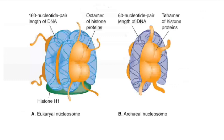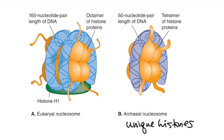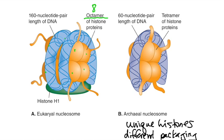One way archaea are similar to eukarya is that they contain histones, but the histones they contain are unique to themselves, and the way they package their DNA around the histones is different from eukarya. Eukarya use octamers of histones — so they have eight histones total — and the DNA wraps around them. About 160 nucleotide pairs wrap around that histone. In the archaeal histone, it's just a tetramer, so they only use four, and the archaeal DNA wraps around only about once — about 60 nucleotide pairs wrap around those histones.